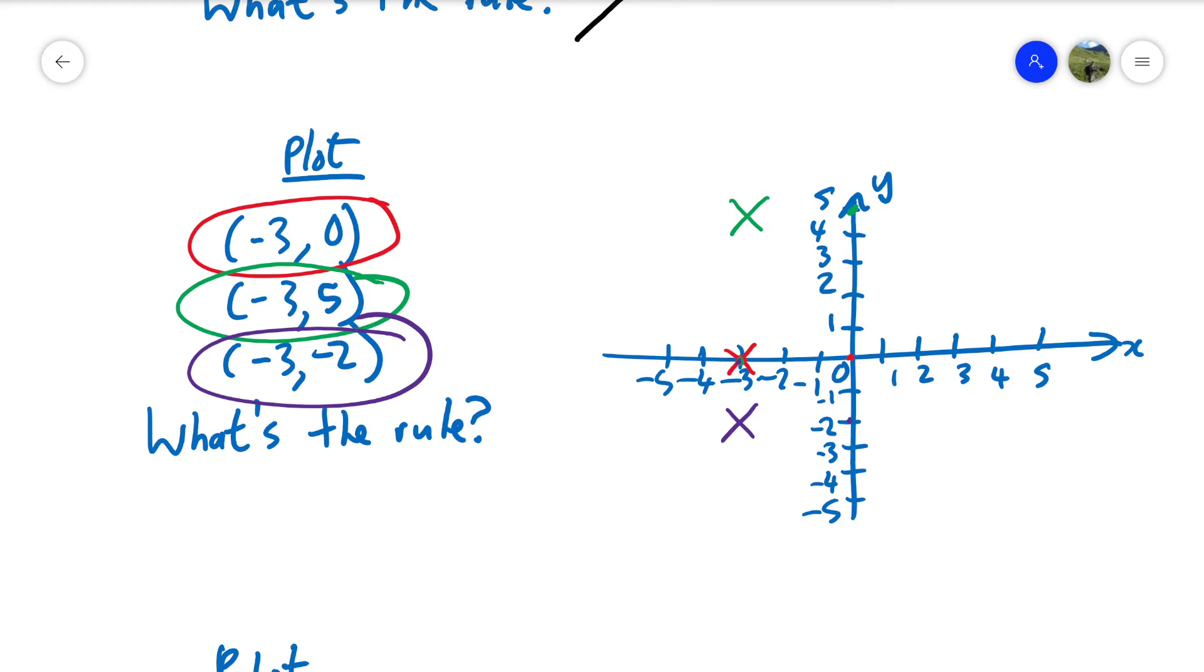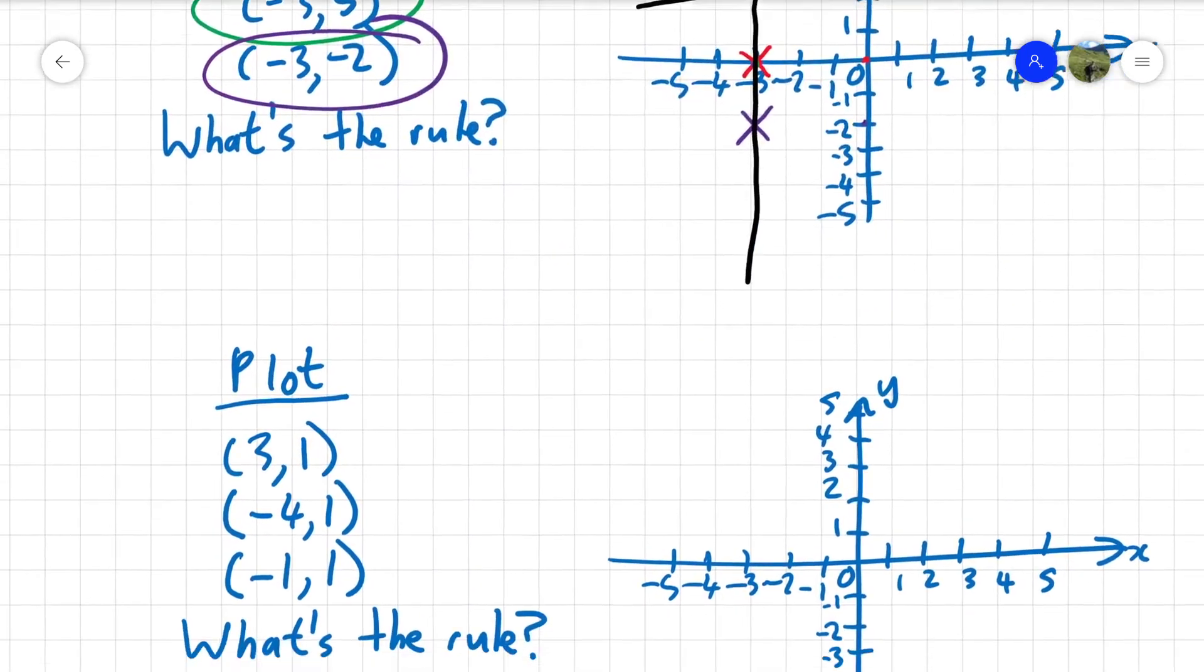Okay. So what's, well, there's the pattern. What's the rule? The number on the left is always the same, which is x. X is always equal to minus three. How do we write x is always equal to minus three in maths language? We write x equals minus three. That's the rule of that line.